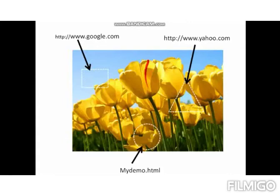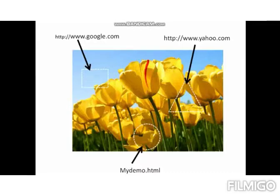When I put my cursor on the rectangular area and there is an internet connection, my image is connected to the Google page. When I click on the circular area, my image jumps to the Yahoo page. The third is a local page — this is my mydemo.html. When I click on that area, my page connects with that local page, mydemo.html. So this single image has some hotspot areas, and clicking on different areas connects to different pages.